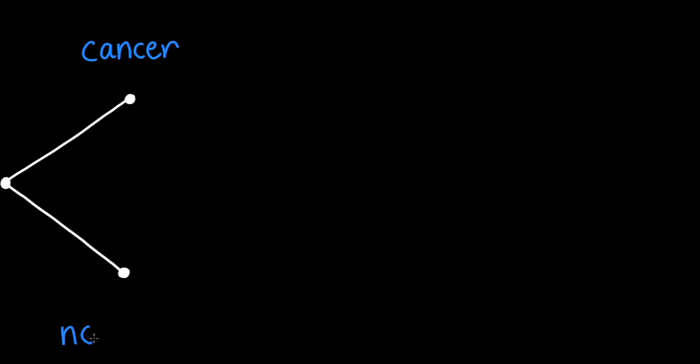Let's return to our opening question. Recall that you've tested positive for a cancer that afflicts one out of a thousand people, based on a test that is ninety-nine percent accurate. More precisely, out of a hundred test results, we expect about ninety-nine correct results and only one incorrect result. Let's use a tree diagram to help with our calculations. The first branch represents the likelihood of cancer in the general population. The probability of having the cancer is one in a thousand, or .001. The probability of having no cancer is .999.